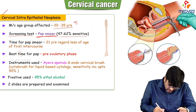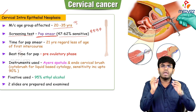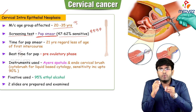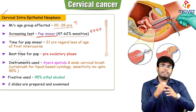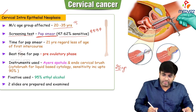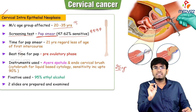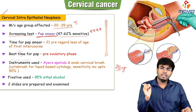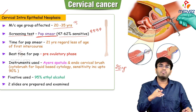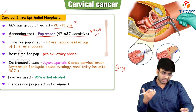We do the Pap smear test to prevent the conversion of CIN to cervical cancer. If I have done the Pap test and seen abnormal dysplastic epithelial cells, I can recommend treatments which will prevent the dysplastic changes from getting converted into cancer. Pap test is a screening test done to prevent the conversion of the pre-malignant condition into a malignant condition.